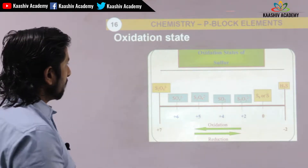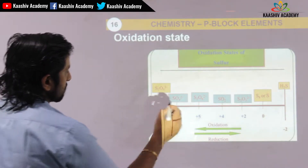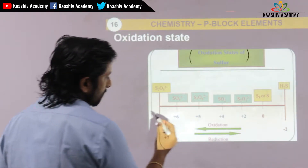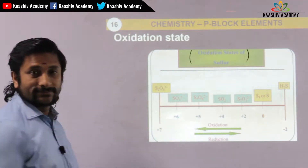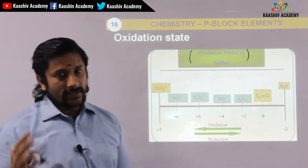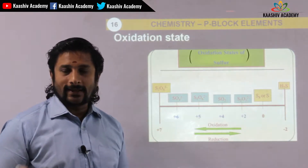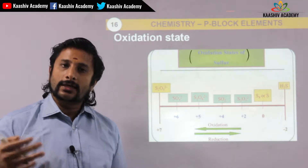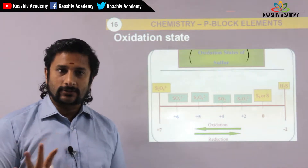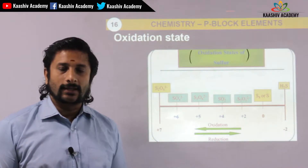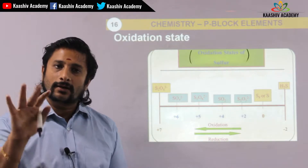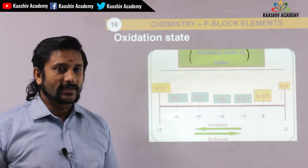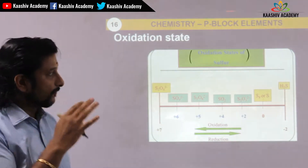So, oxidation state — the oxidation state involves loss of electrons; reduction involves the gaining of electrons. This process is done via the redox reaction. So the oxidation state of sulfur kind of question can be asked.